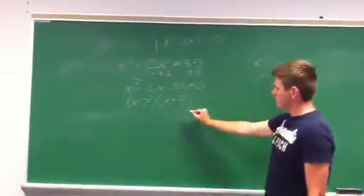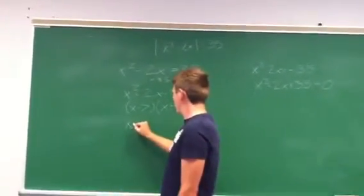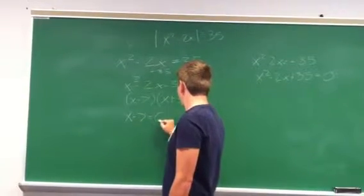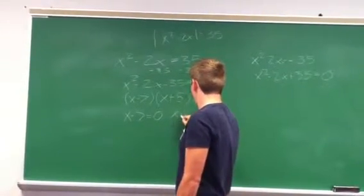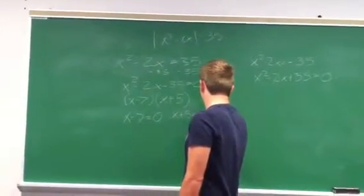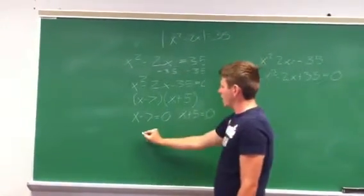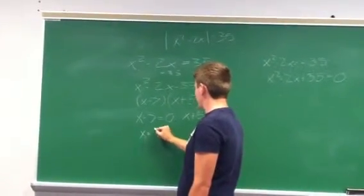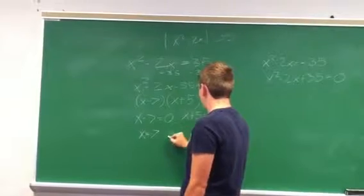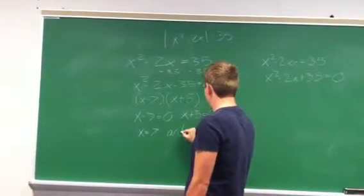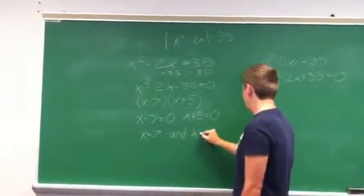Setting both of these equal to 0, we're going to give you x equals positive 7 and x equals negative 5.